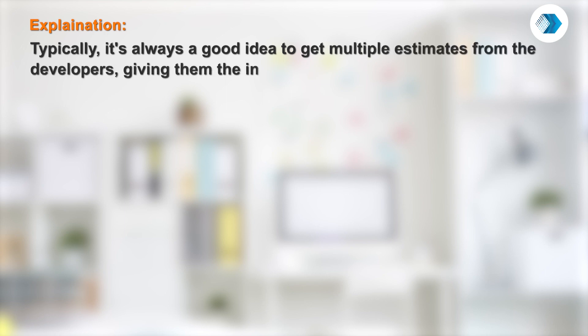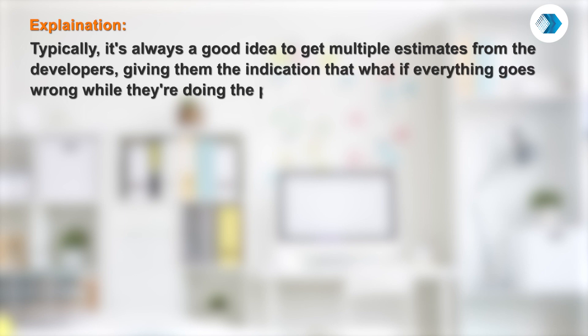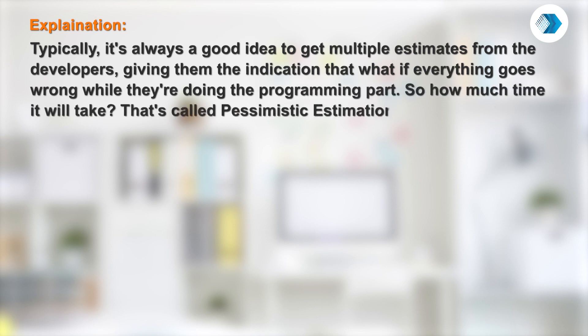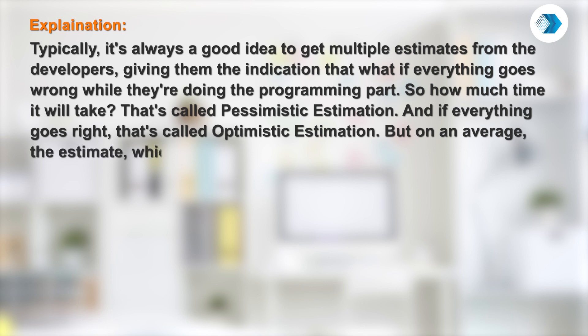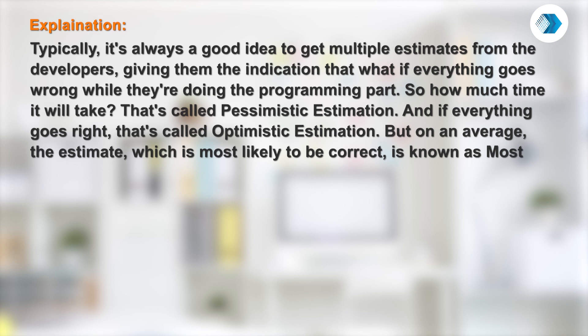Typically, it's always a good idea to get multiple estimates from the developers — asking what happens if everything goes wrong during the programming part, which is called pessimistic estimation; and if everything goes right, that's optimistic estimation. On an average, the estimate most likely to be correct is known as the most likely estimate.